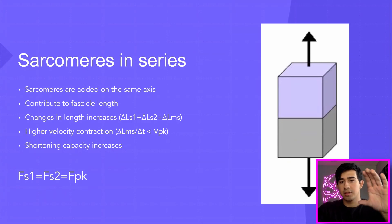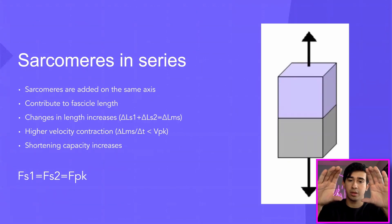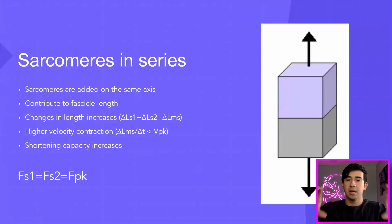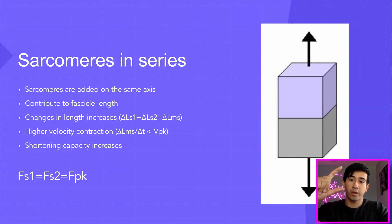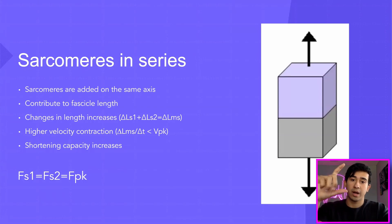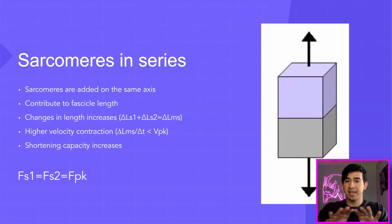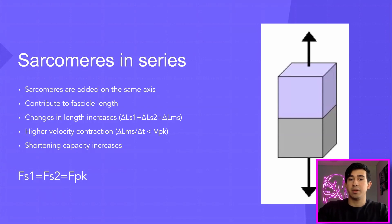We have an equation showing this: if we take the change in length of a parallel sarcomere arrangement and the change in length of a series arrangement, and divide by the same time interval — since velocity is just the change in length over the change in time — the peak contraction velocities will be much higher for sarcomeres in series than in parallel. The one in series has a larger numerator in the fraction, meaning we're dividing a larger change in length by the same time interval, giving a greater result. So the shortening capacity increases.